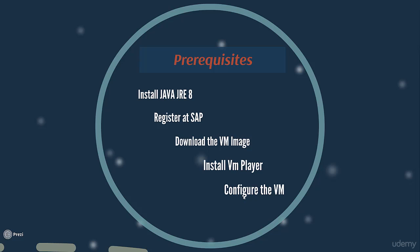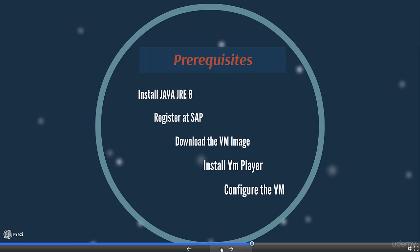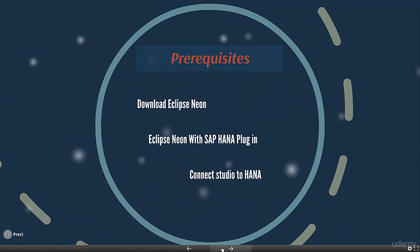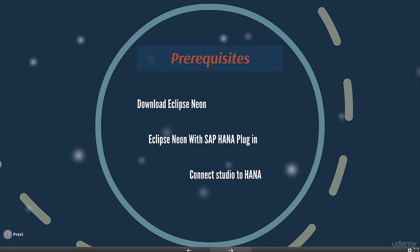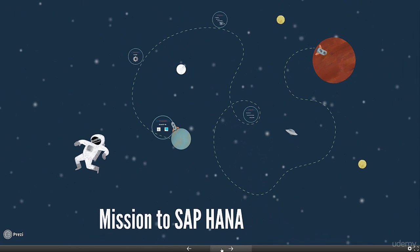Then we're going to configure the VM. After that, you need to download Eclipse Neon, then configure the SAP HANA plugin by giving a link and downloading. Finally, we're going to connect SAP HANA Studio to the server on the VM. That's our mission — let's go!